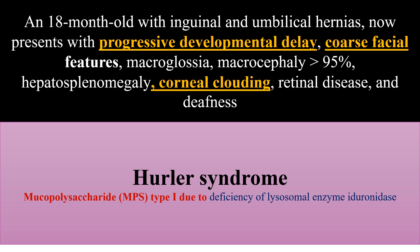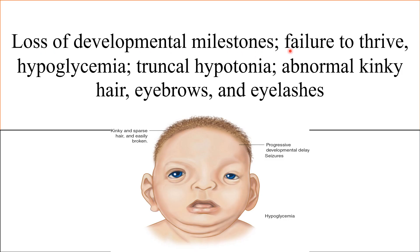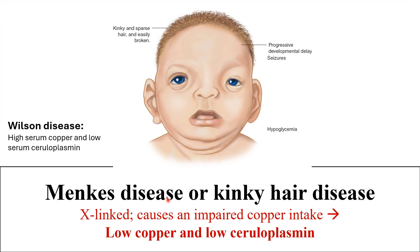Loss of developmental milestones, failure to thrive, hypoglycemia, truncal hypotonia, abnormal kinky hair, eyebrows, and eyelashes — the most likely diagnosis is Menkes disease, also known as kinky hair disease. It is X-linked, presents in boys, and causes impaired copper intake and abnormal elastin with low copper and low ceruloplasmin. Remember: in Wilson disease you have high serum copper, but here you have low serum copper. Both conditions have low serum ceruloplasmin.